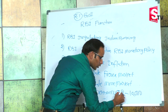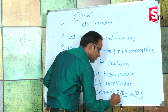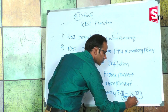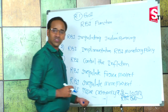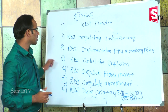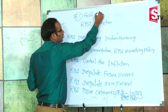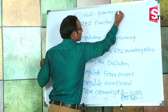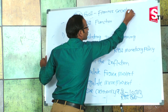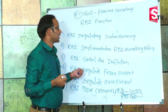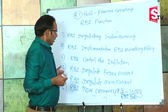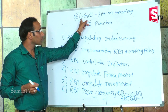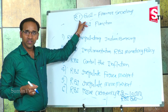For 2 rupee to 10,000 rupee currency notes, the signature is that of the RBI Governor. The signature on the 1 rupee note is that of the Finance Secretary. So: 1 rupee — Finance Secretary; 2 rupees to 10,000 rupees — RBI Governor.